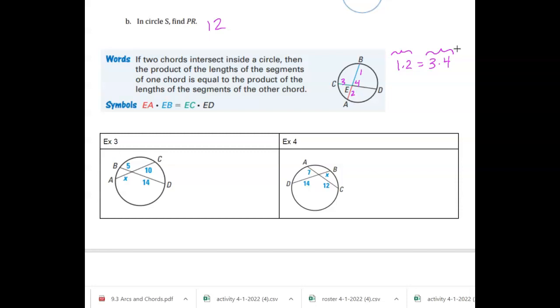So let's look at example 3. Using that idea, I know BD is a chord and AC is a chord. So I'm going to take the two parts of BD, so we're going to say 5 times 14 is equal to the other two parts of AC. So X times 10.